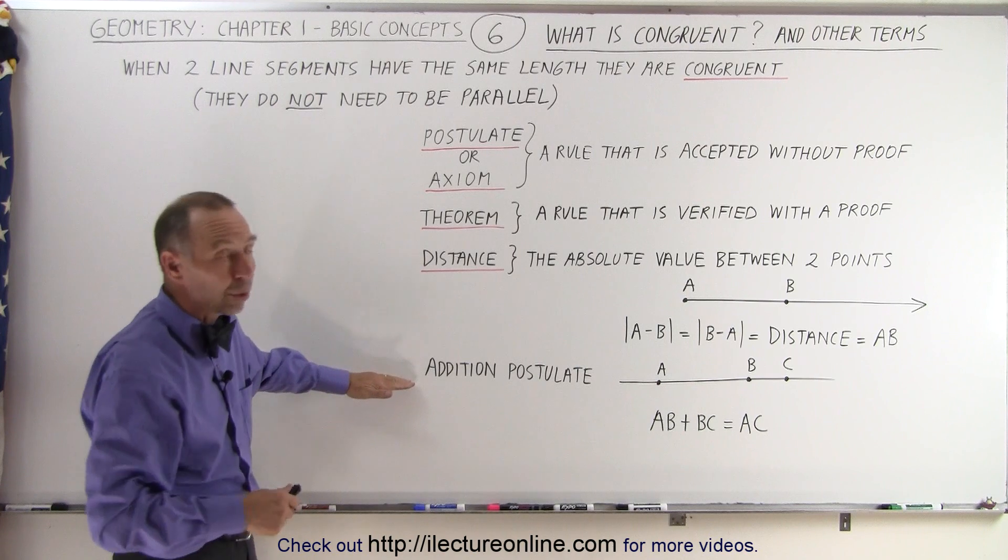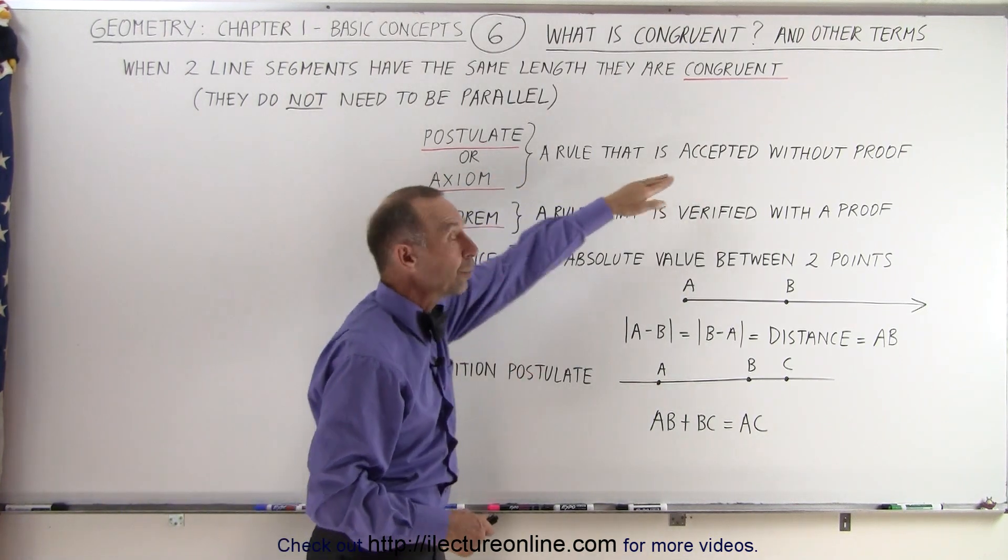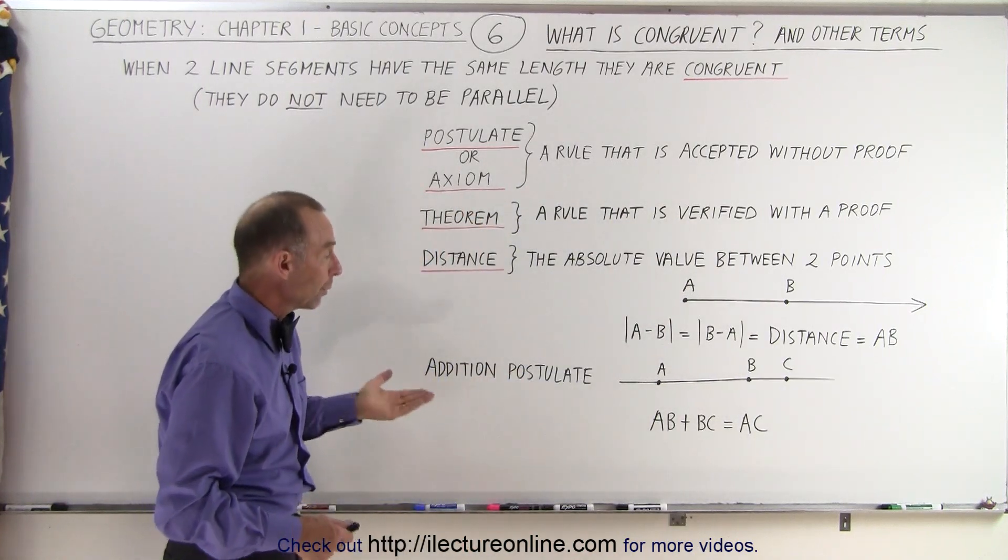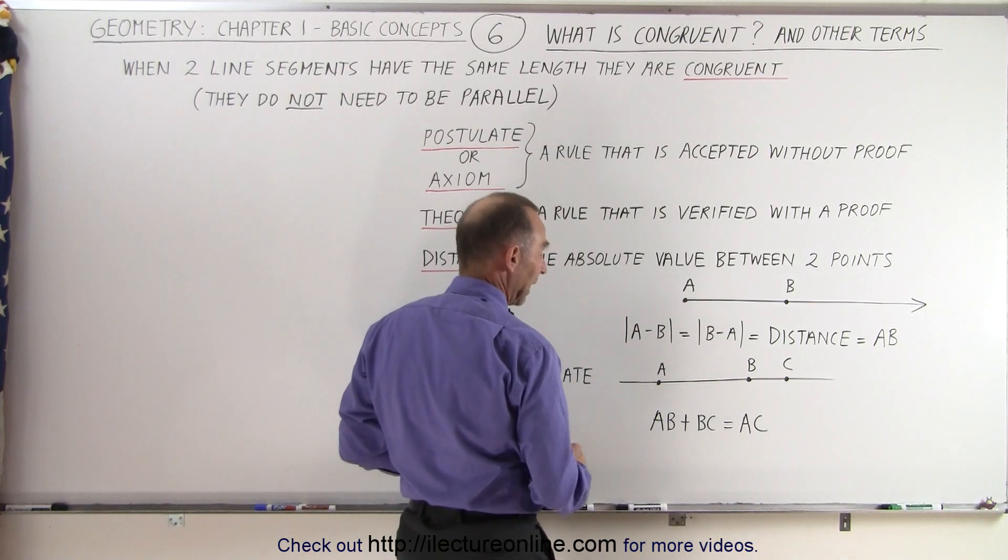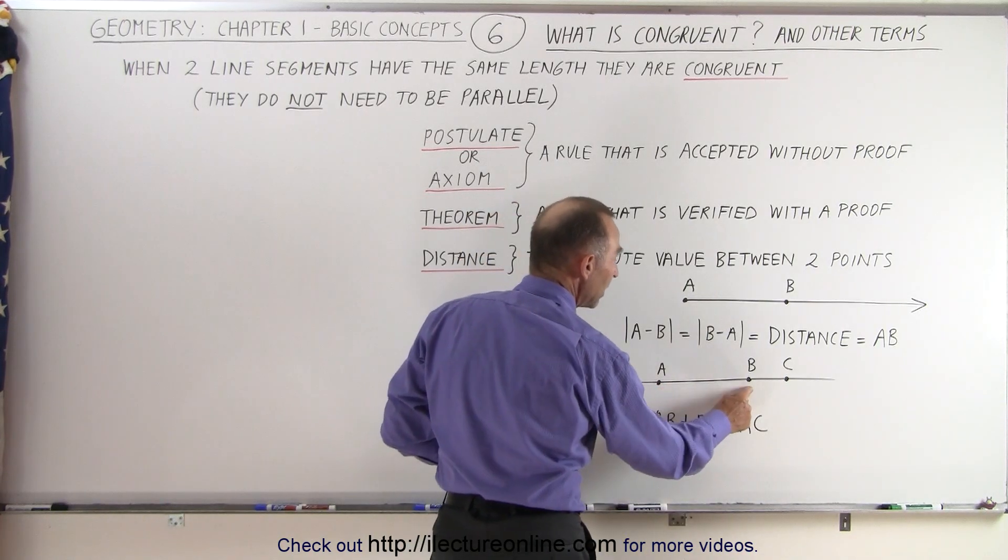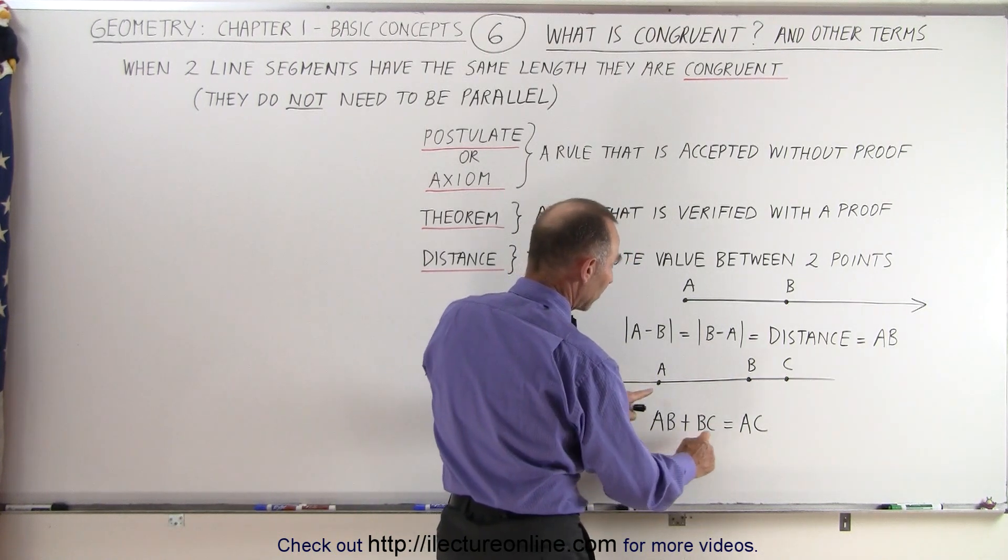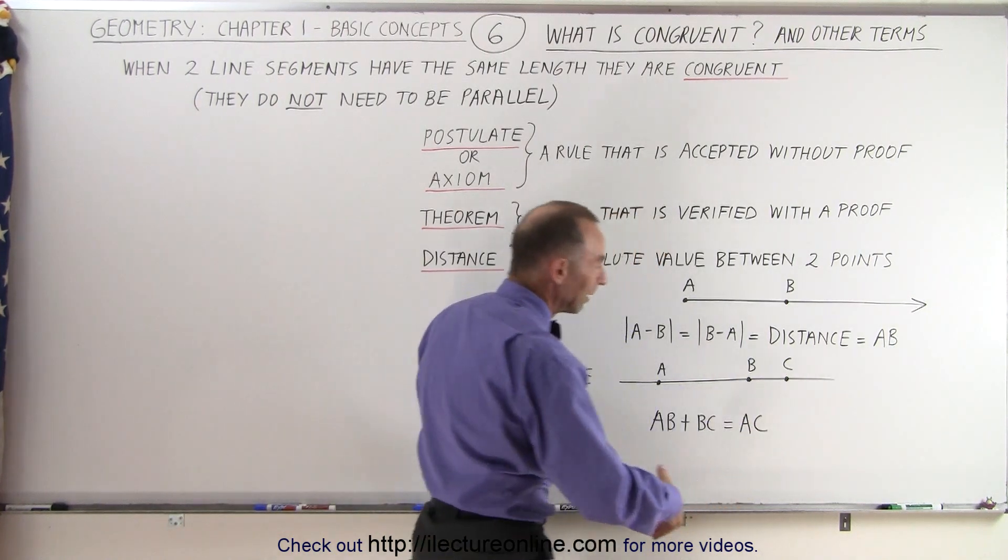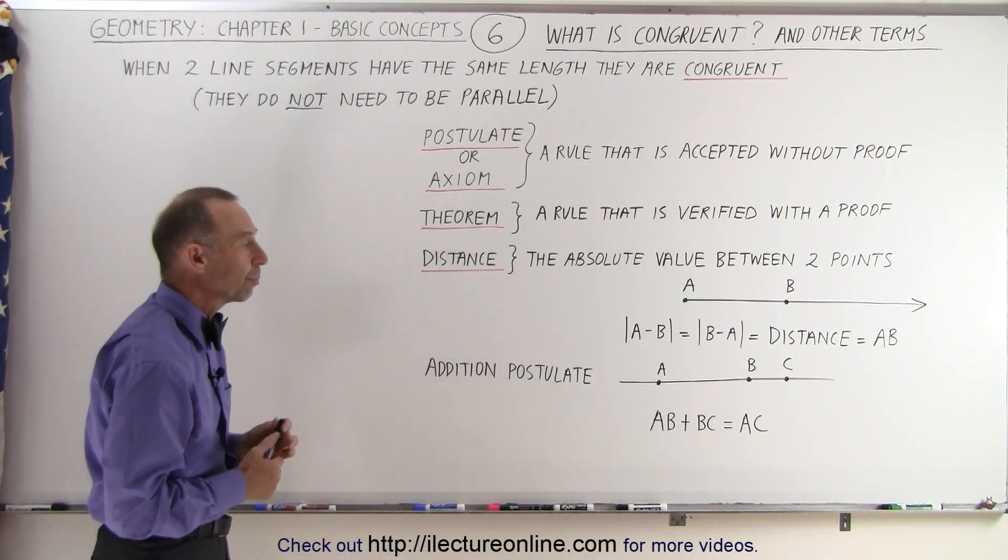And here we have what we call the addition postulate. Remember the postulate is a rule that we don't need to prove. Here what we're saying is that we have three points on this line, and if we take the distance from A to B, and then we take the distance from B to C, and then we add those two distances, we get the distance from A to C. That appears to be true by just simply looking at it. We do not need to prove that.